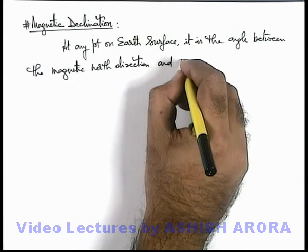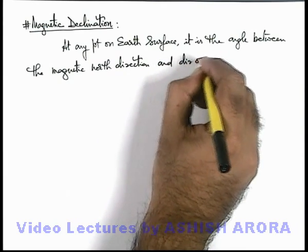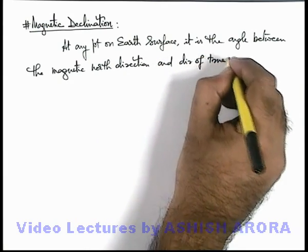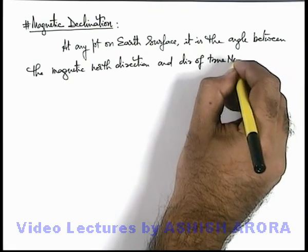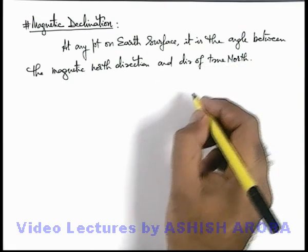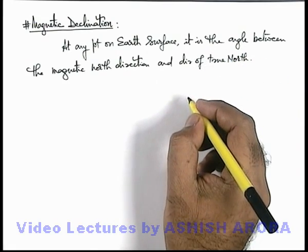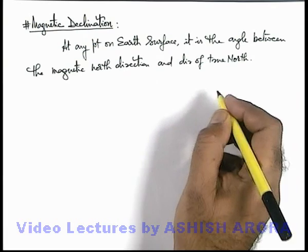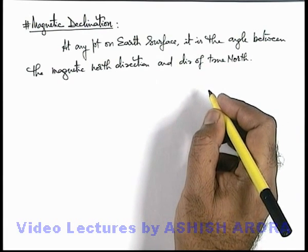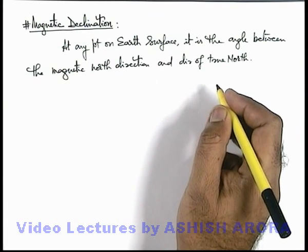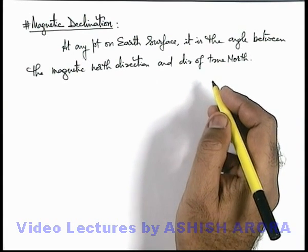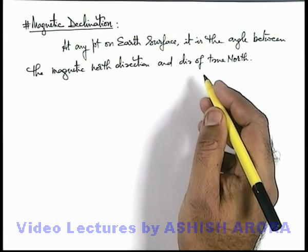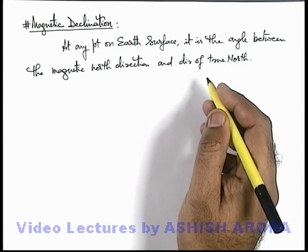And the direction of true north — true north is the direction pointing towards the north pole of earth, or the direction pointing directly towards the earth's rotational axis.